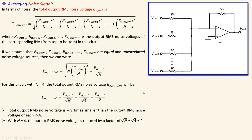An important note: since noise power must be constant, reducing the noise voltage will increase the noise current. So if you focus only on noise voltage reduction, the noise current must increase to keep noise power constant — that is the trade-off we give away.